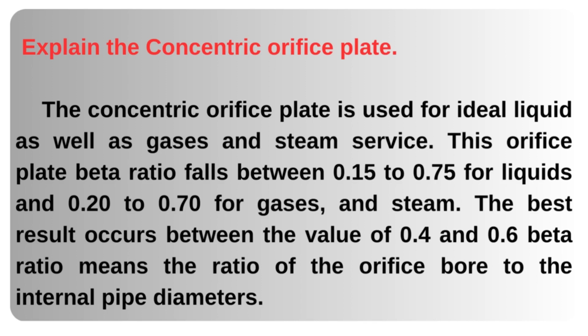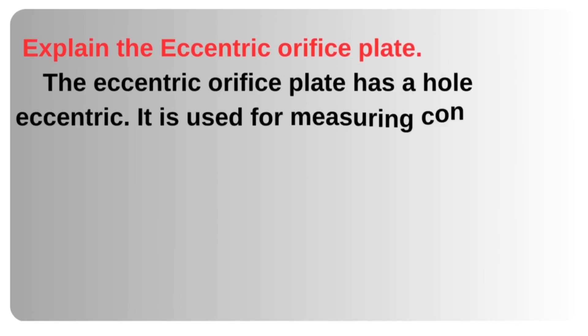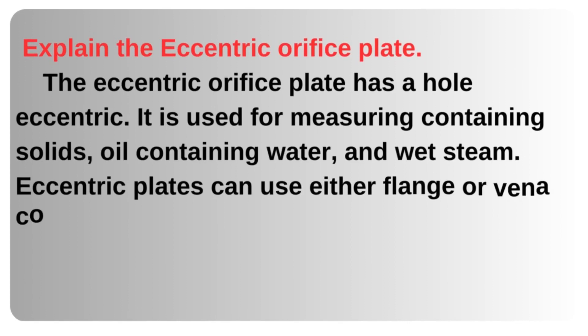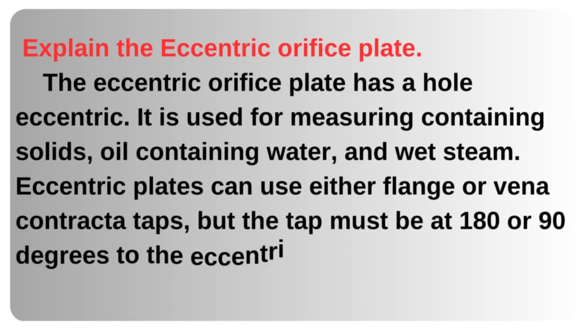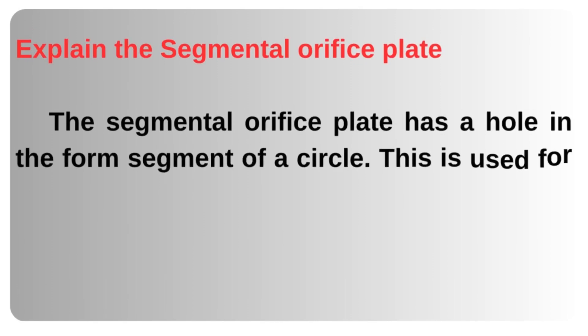Beta ratio means the ratio of the orifice bore to the internal pipe diameter. The eccentric orifice plate has an eccentric hole. It is used for measuring fluids containing solids, oil containing water, and wet steam. Eccentric plates can use either flange or vena contracta taps, but the tap must be at 180 or 90 degrees to the eccentric opening.